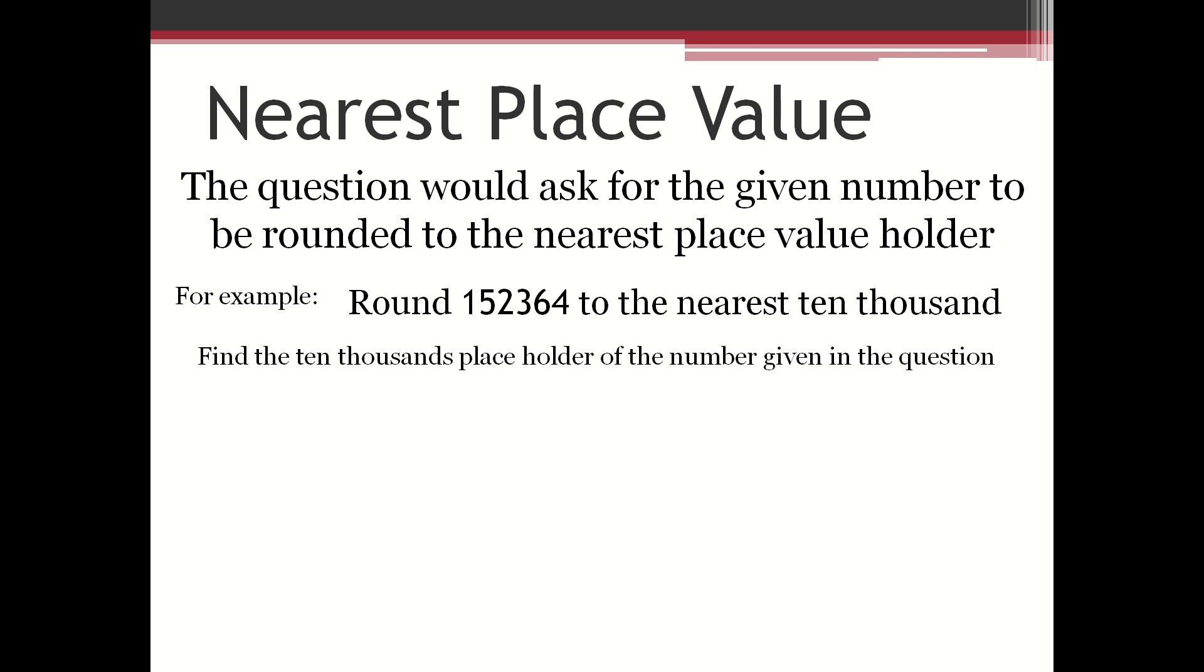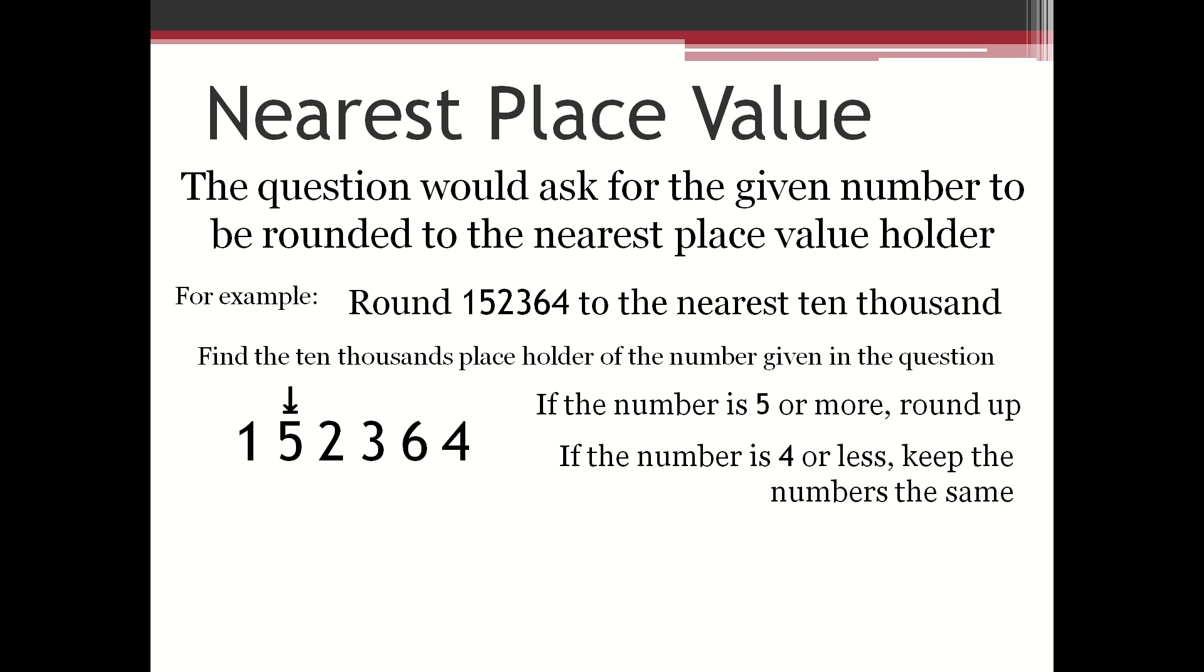Find the ten thousands placeholder of the number given in the question, and that will be the five. The rounding rule is: if the number is five or more, round up, and if the number is four or less, keep the number the same.